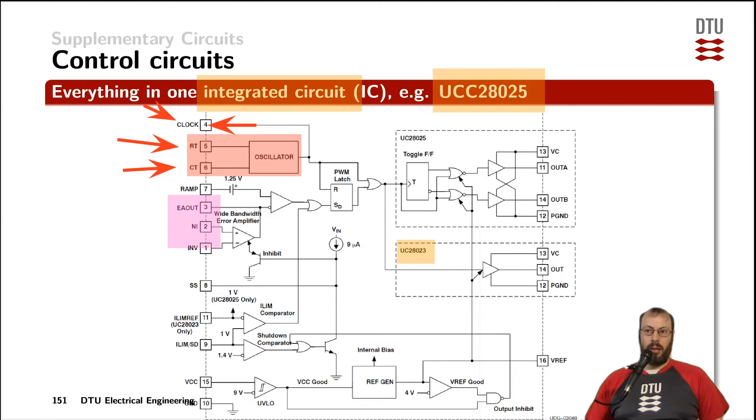Then we have an error amplifier down here with the non-inverting and the inverting input and the output of the error amplifier routed out so the user can build its control circuit around it. Very often the resistors and capacitors you connect here and form your PI, PID controller or other controllers are called the loop filter.